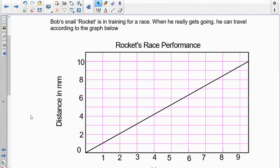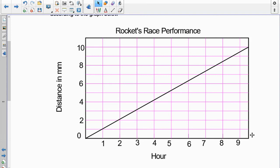Alright, here we go. Bob's Snail Rocket is training for a race. When he really gets going, he can travel according to the graph below. So, let's take a look at what we've got. We've got Rocket's race performance. The distance in millimeters. And it is over an hour. So, we can see this is one, two, three millimeters. So, he's actually traveling. There's one millimeter. So, he's about doing a millimeter every hour.